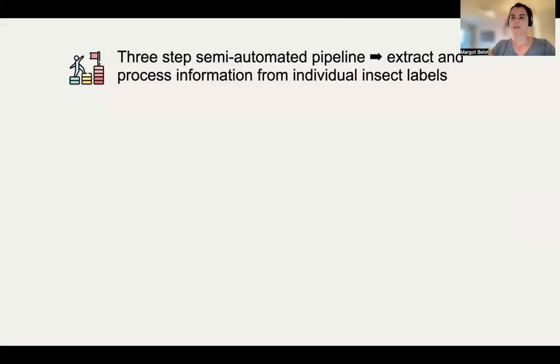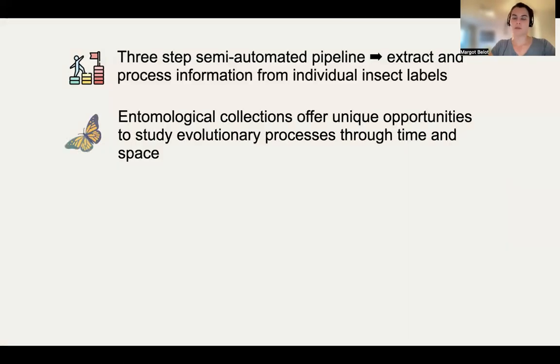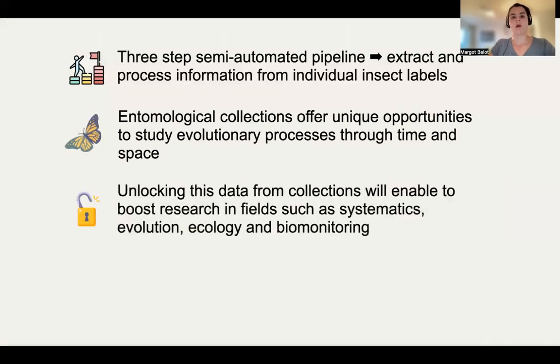Our pipeline has three steps, it is semi-automated and our main goal is to extract and process information from individual insect labels. We chose labels from our entomological collections because they offer unique opportunities to study evolutionary processes through time and space. Unlocking this data will enable us to boost research in fields such as systematics, evolution, ecology and biomonitoring. We want to develop a framework that can be applied in other collections and institutions around the world.